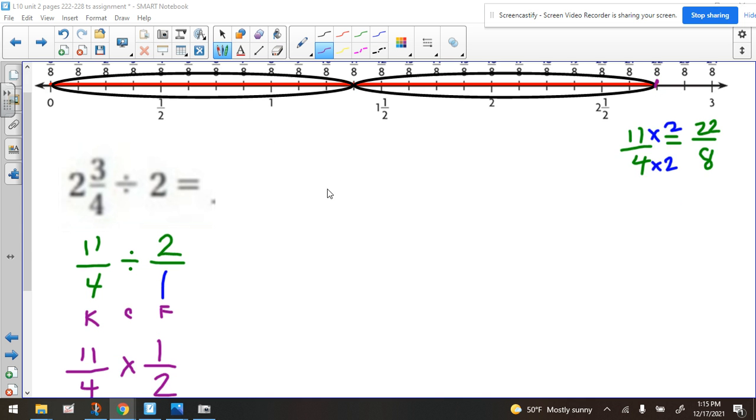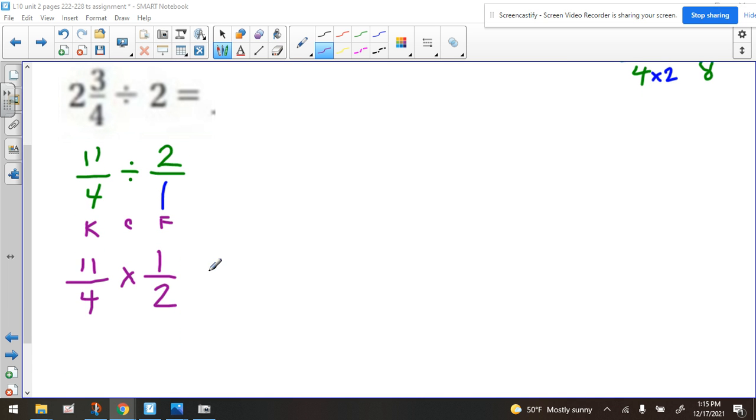Or if we proceed with the algorithm, and we just do the division, turn this into an improper fraction, turn this into an improper fraction, then do the keep-change-flip. And now let's proceed with the rules for multiplying. So we don't have any cross-reducing. Don't attempt to cross-reduce when it's still division, by the way.